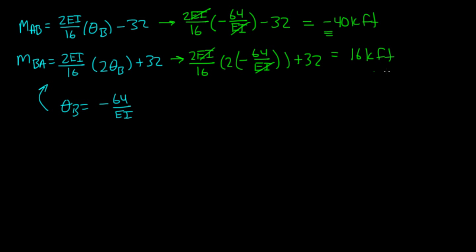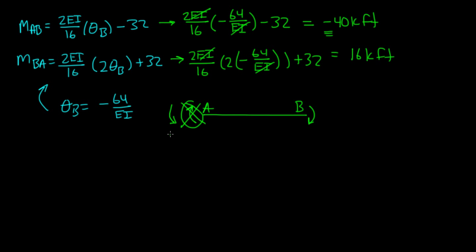What does the negative sign mean? Our sign convention is that moments at the ends of members are always clockwise. Since M_AB was negative 40, that moment is actually counterclockwise — so it's 40 kip·foot counterclockwise. M_BA was positive 16, meaning it goes the way we assumed, clockwise — so that's 16 kip·foot clockwise.